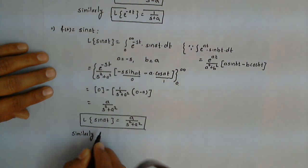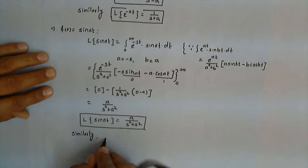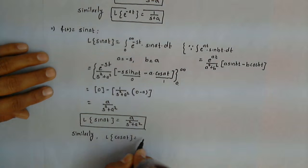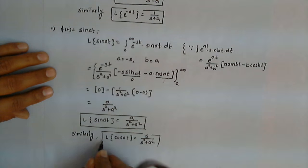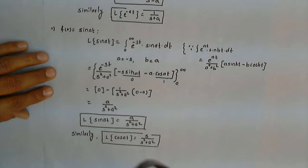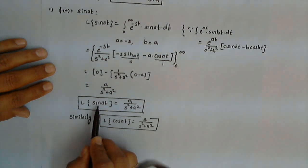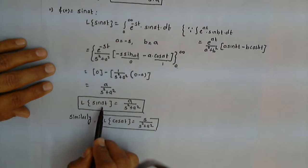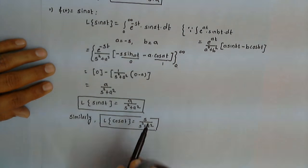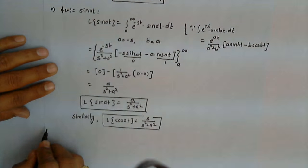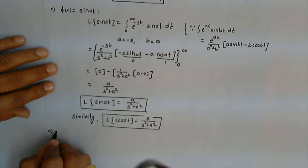Similarly, we can prove that the Laplace transform of cos(at) is s upon (s squared plus a squared). We can easily see that the Laplace transform of a function of t is a function of s with a as a constant.